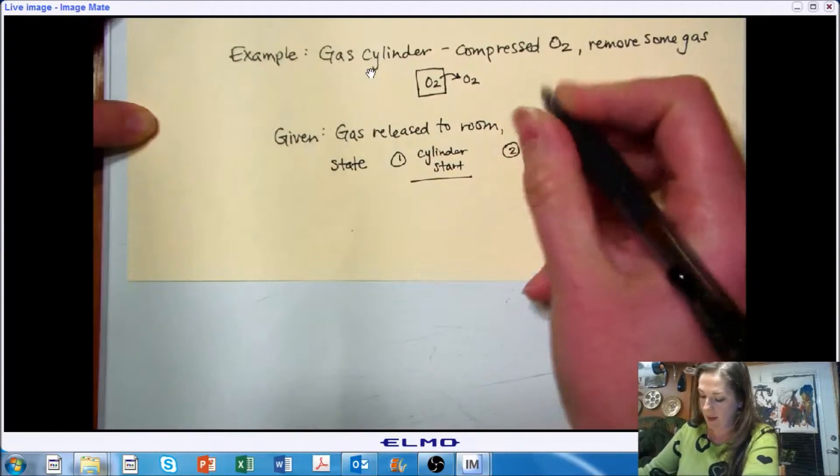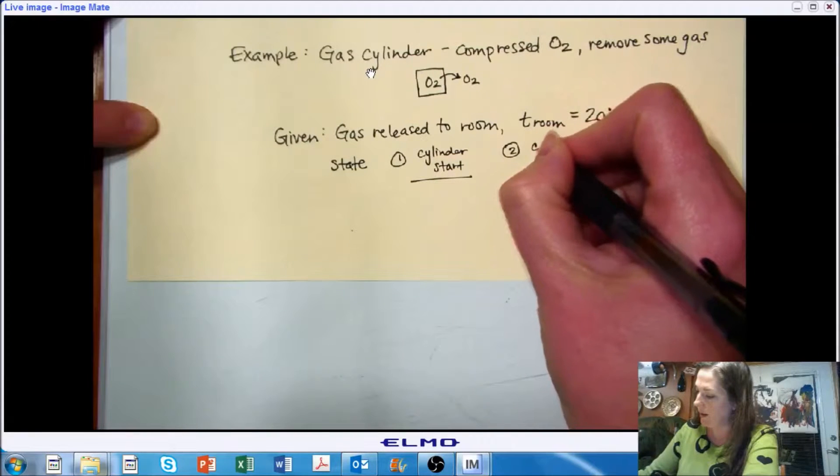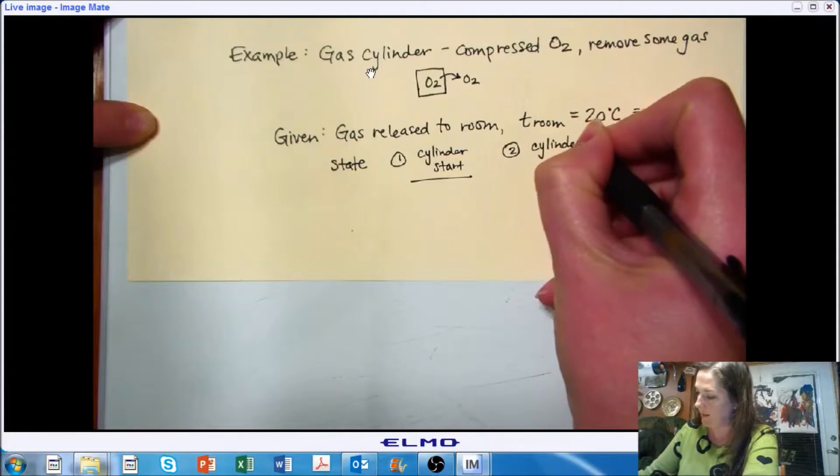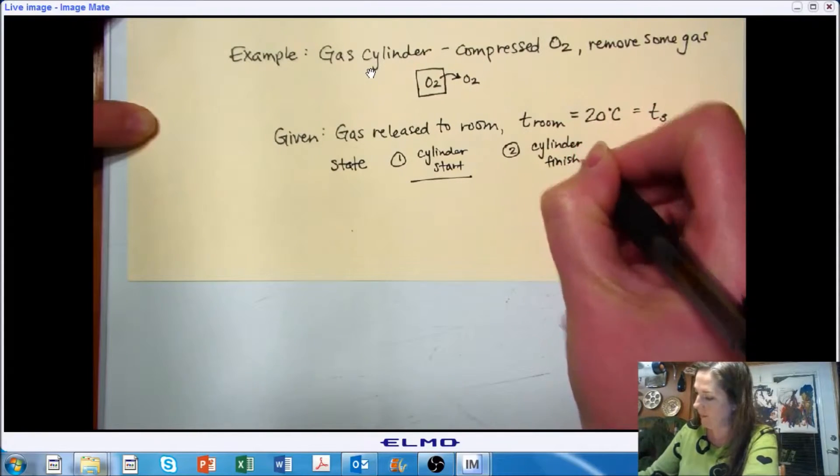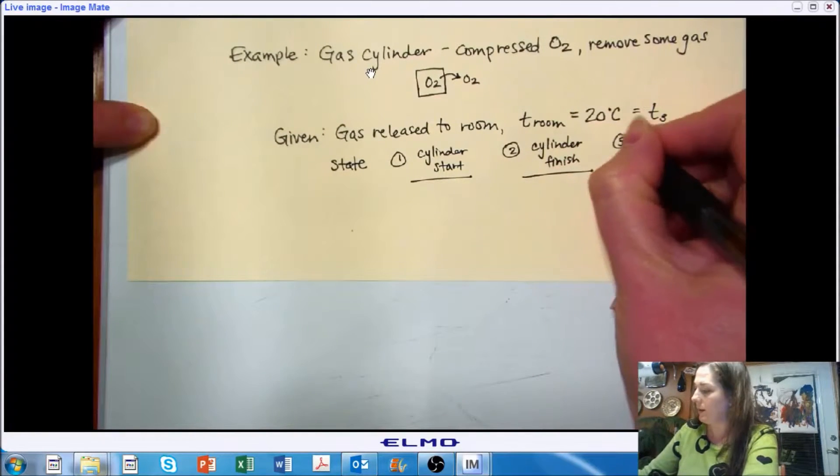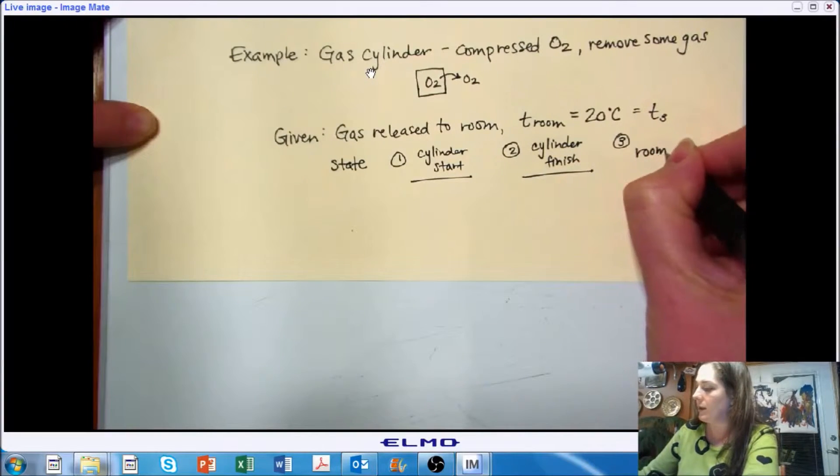The second state is going to be of our cylinder after we have let some of the gas out. And the third state we're going to look at is the room that we're exhausting to.